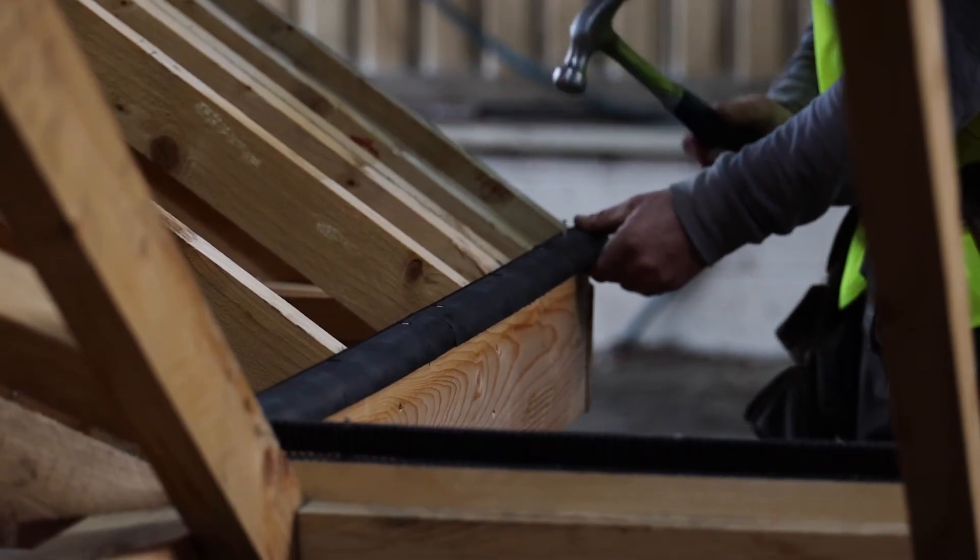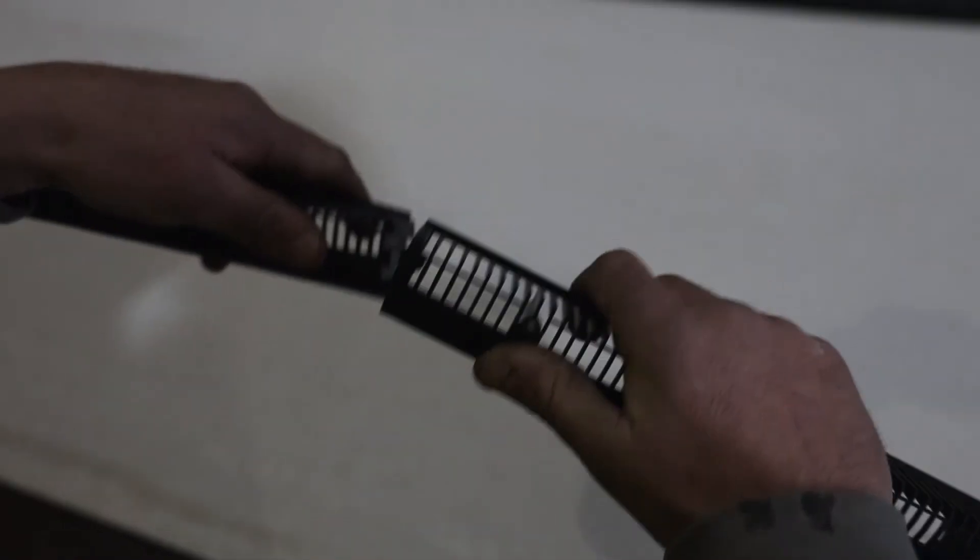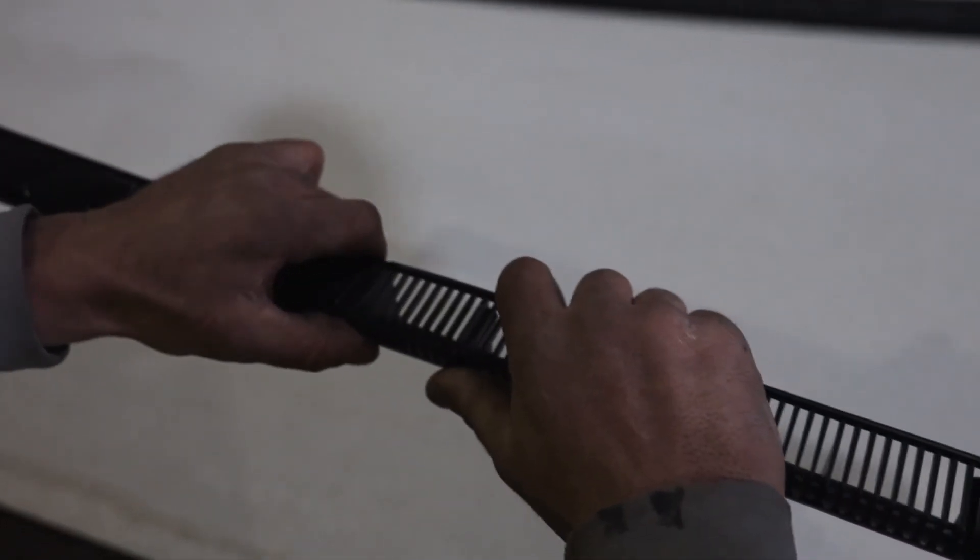Fix the overfascia ventilator in place using the nail holes and connect each piece together using the interlocking joints to give a seamless continuous fit.